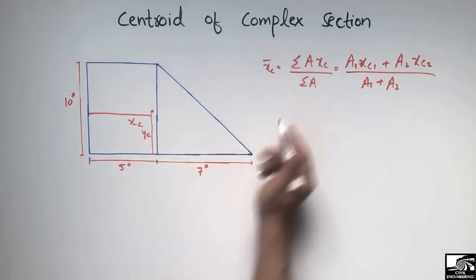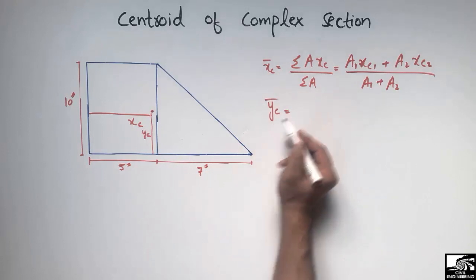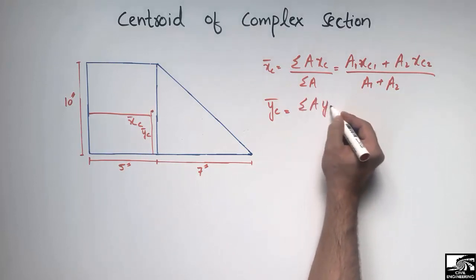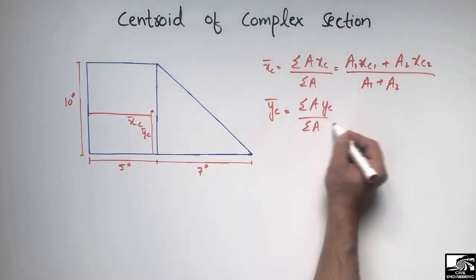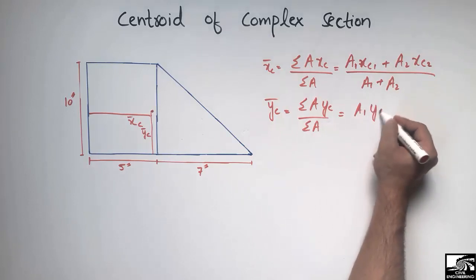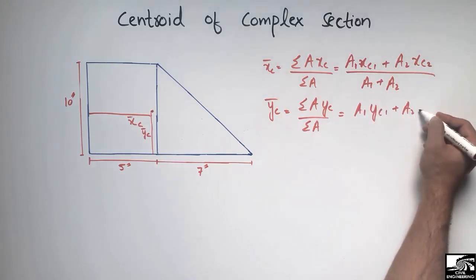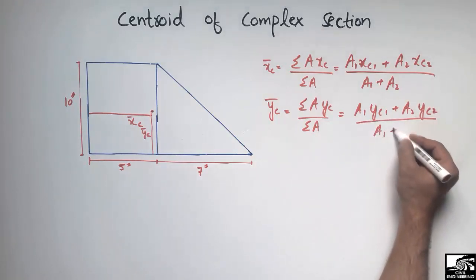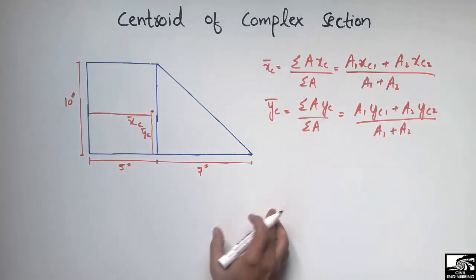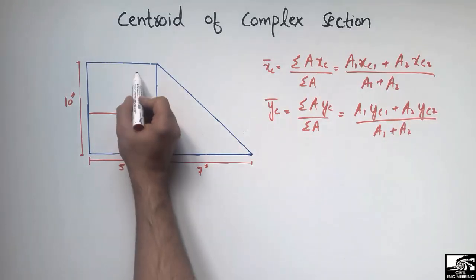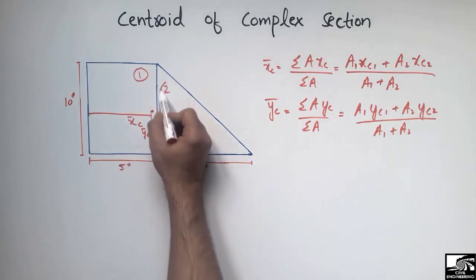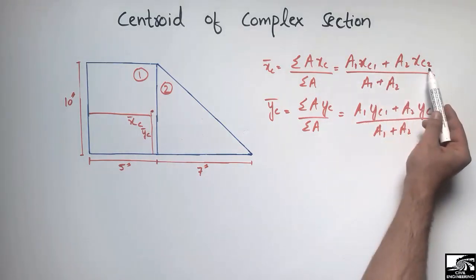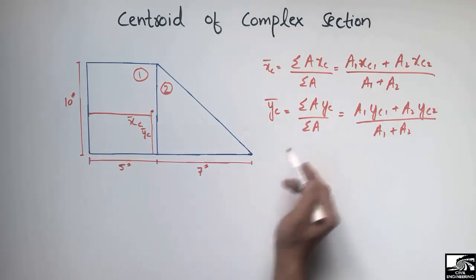Similarly, the y-bar centroid in the y-direction is: summation of area times yc, divided by summation of area — so (A1 × yc1 + A2 × yc2) divided by (A1 + A2), where A2 is the second area object multiplied by yc2, the centroid of the second object, divided by the total area. We have two objects: rectangle is object 1 and triangle is object 2.